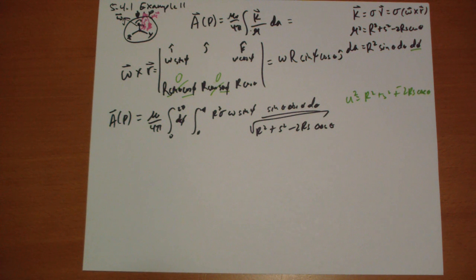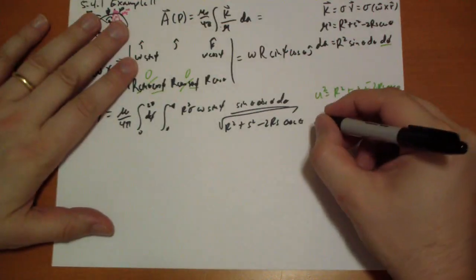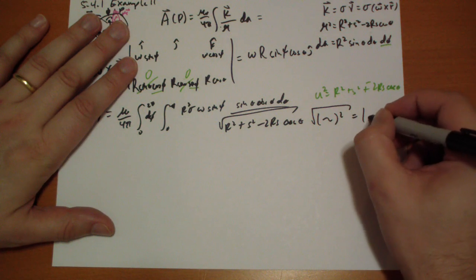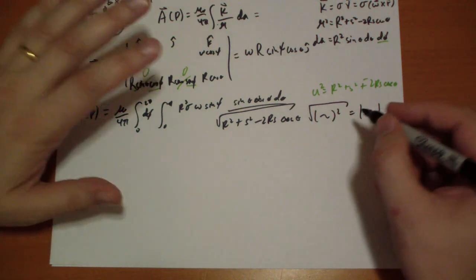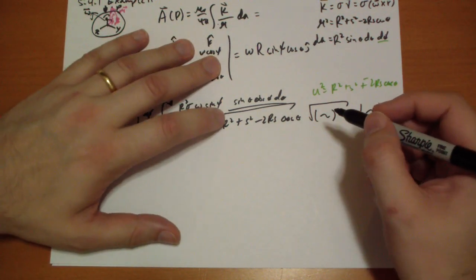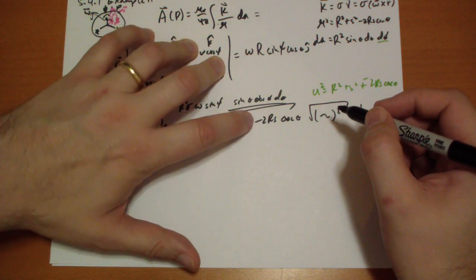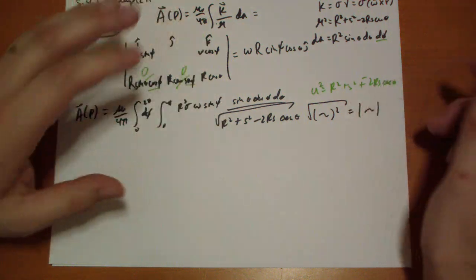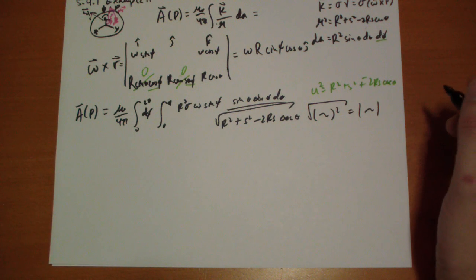So the end result is... one little trick is remember that when you have the square root of something squared, that's just the absolute value of the something. And you're going to find this because you're going to get R squared plus S squared minus 2 R S or R squared plus S squared plus 2 R S, which is just R plus S squared or R minus S squared. So that's a little trick that you're going to run into as well.